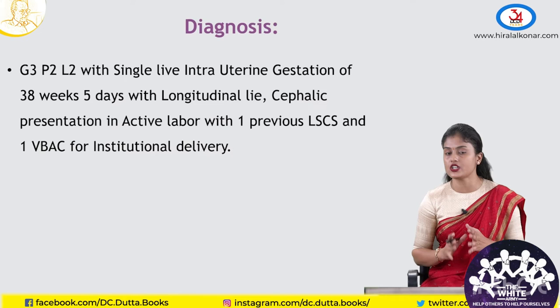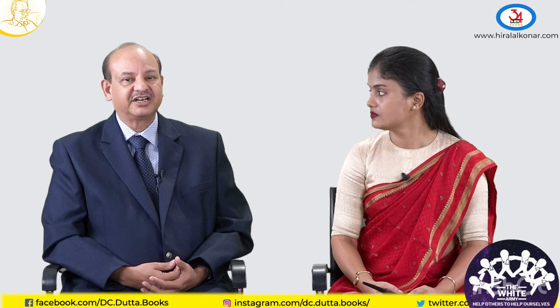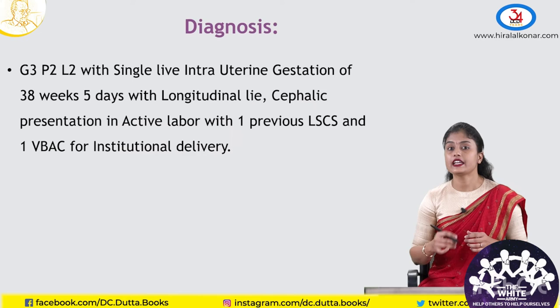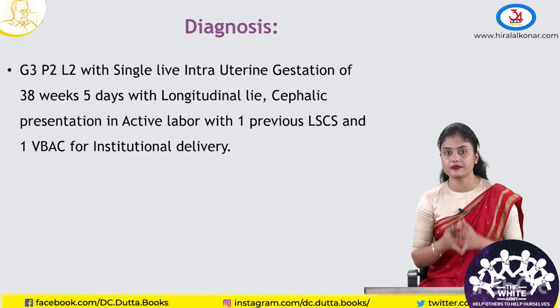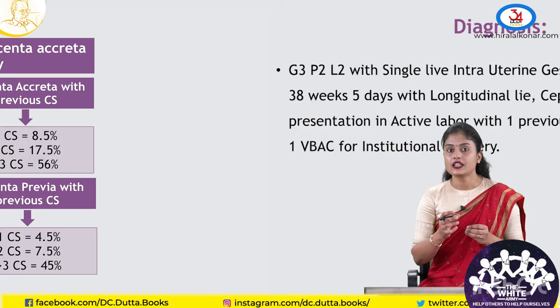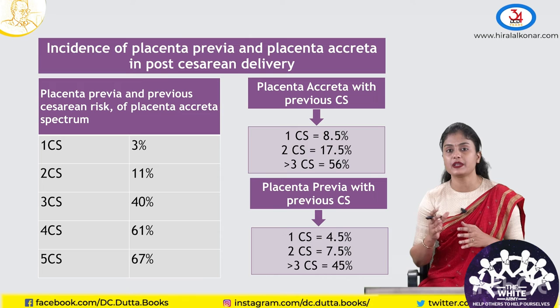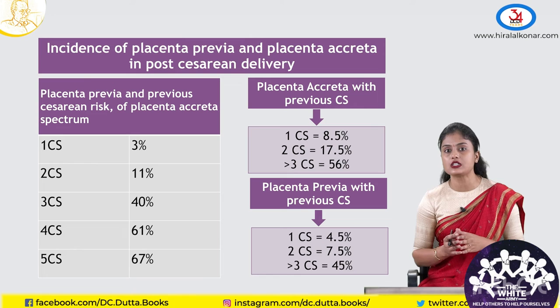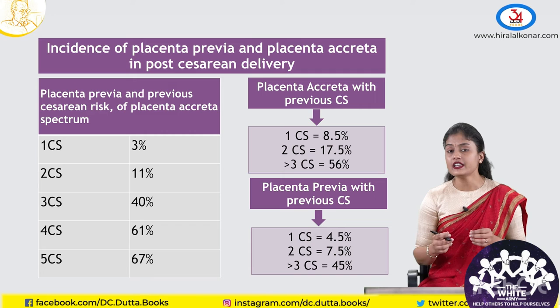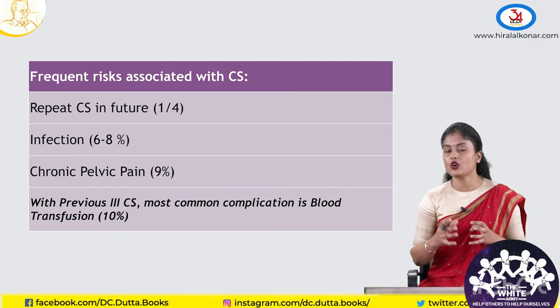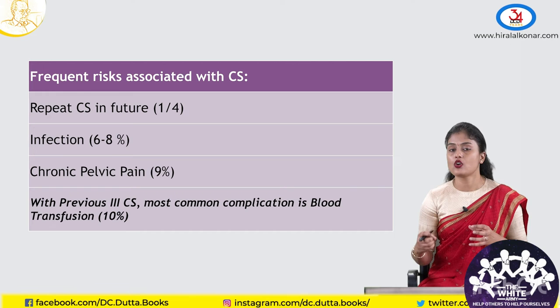Dr. Roshni has mentioned some complications related to repeat caesarean delivery. In the third stage of labour, after extraction of the baby, delivery of the placenta might be difficult due to adherent placenta, which is more common after a previous caesarean. As the number of caesareans increases, the chances of adherent placenta also increase. Secondly, after extraction of the placenta, there can be postpartum haemorrhage due to difficulty in uterine contraction from adhesions. If the placenta cannot be removed, we may have to perform caesarean hysterectomy.